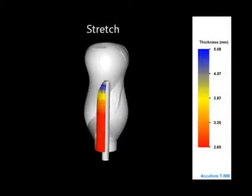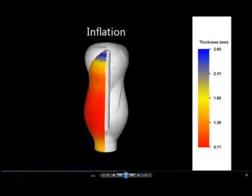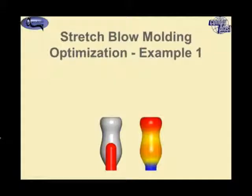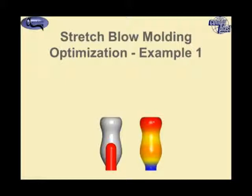Here's a simulation of the stretch blow molding process where the stretch rod pushes the preform to the top and then the inflation takes place to form the final part. The preform is stretched up to the top and then blown out to achieve a certain thickness in the wall. In this case we have a uniform preform thickness. The colors represent thickness, with blue being the maximum thickness and red being the minimum, and as you might expect this area stretches out the most at the large diameter and becomes thinner.